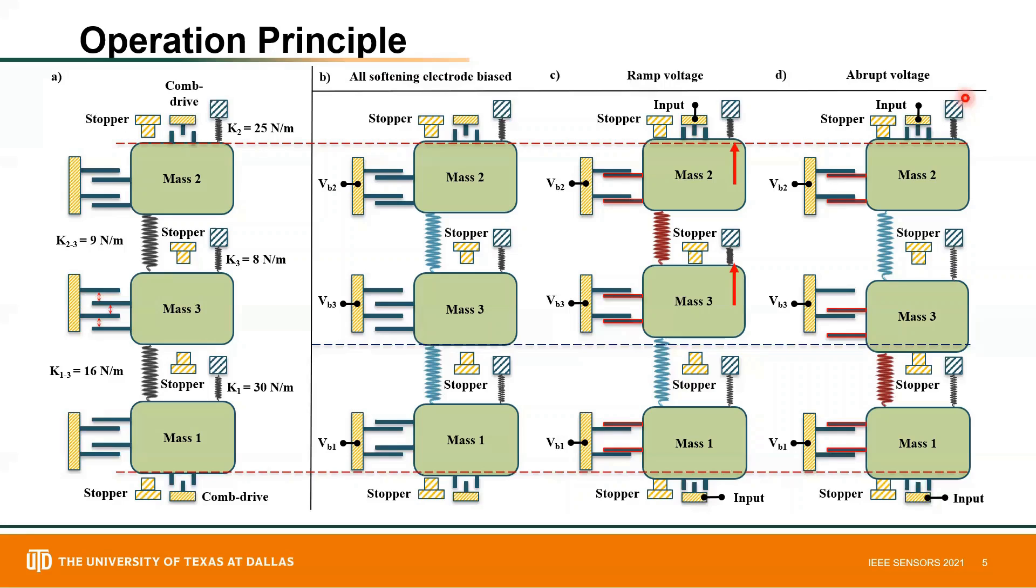On the other hand, with the device at its resting position and bias voltages applied, if an abrupt voltage is applied to the input comb-drive, both mass one and mass two would pull in almost at the same time.